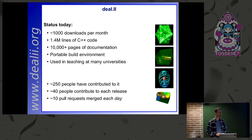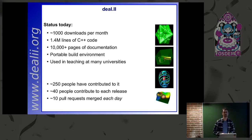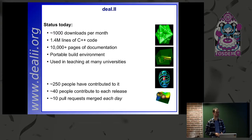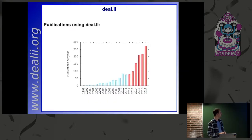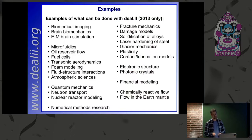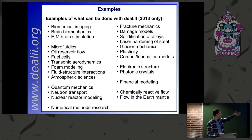It has about a thousand downloads per month. Over 20 years, about 250 people have contributed to it — it's a sizable community project. We merge about 10 pull requests every day. There is a council of 10 principal developers that reviews every patch and mentors newcomers to become productive in the community. Every patch typically has a back-and-forth where we say 'you could do this easier, better, or more generally.' There's been a nice growth in publications over time — applications in biomedical, fluids, fundamental physics, quantum mechanics, neutron transport, numerical methods research, solids, electronics, and even financial modeling.